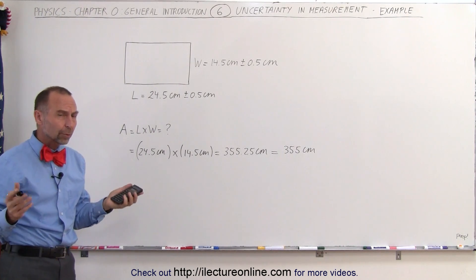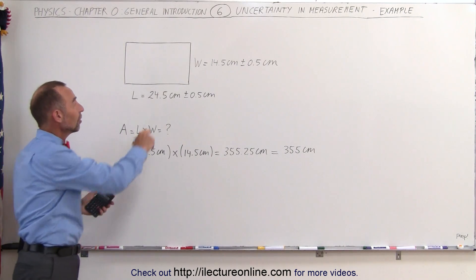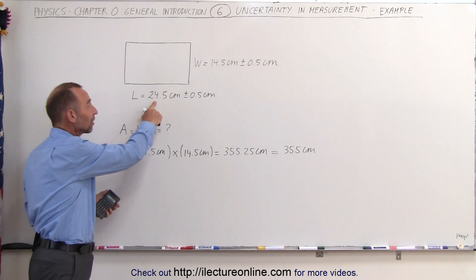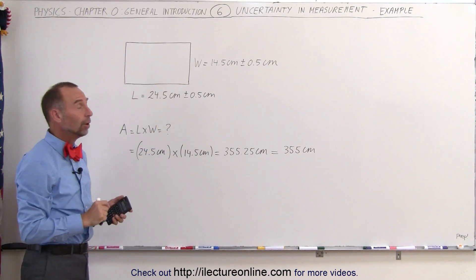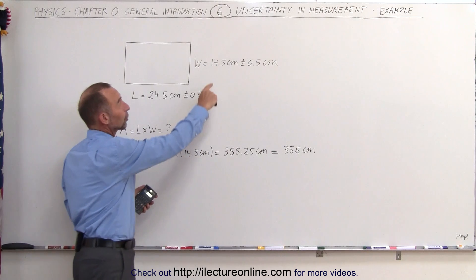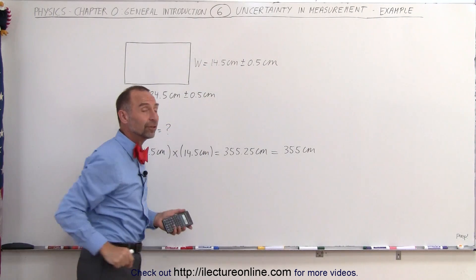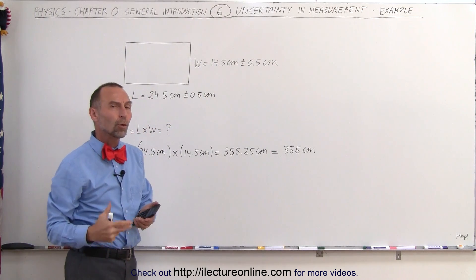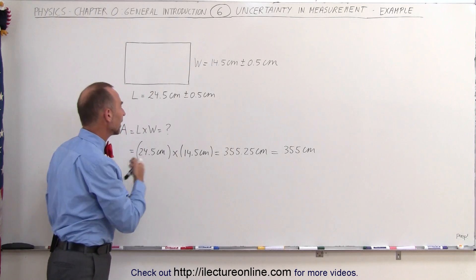However, we knew that there was some uncertainty in the numbers. The length could be as high as 25 and as low as 24 centimeters. The width could be as high as 15 and as low as 14 centimeters. So, what is the uncertainty in the final area?